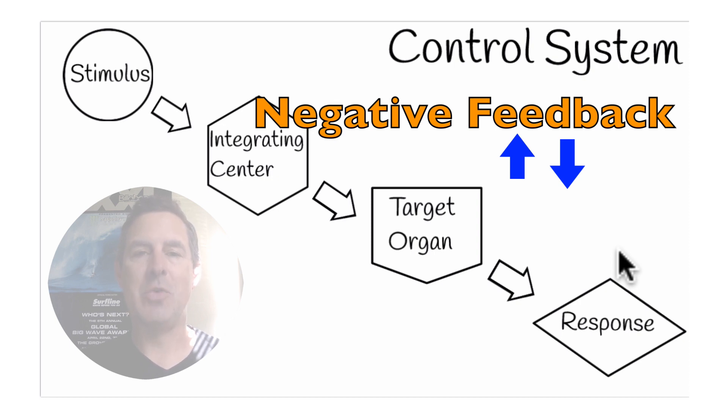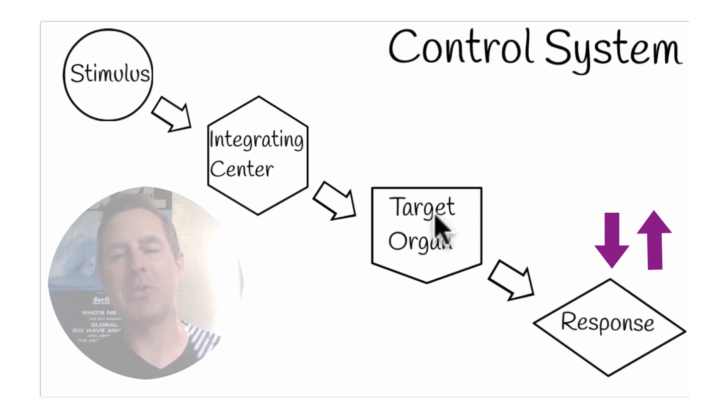If we have diminished body temperature, the target organ is going to be the skeletal muscles, which will start shivering or twitching to generate body heat and bring it back up. If we have elevated body temperature, the target organ would be our blood vessels and sweat glands, which would decrease our body temperature back to the acceptable range.